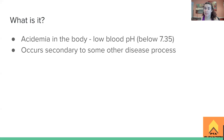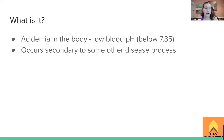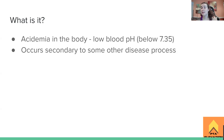Acidemia is happening in the body and that is due to a low blood pH. Normal blood pH range is 7.35 to 7.45. If it drops below that, we are going into an increased amount of acid in the blood — the blood is becoming acidic, essentially just a bunch of hydrogen ions floating around. And this always occurs secondary to some other disease. You do not get metabolic acidosis all by itself — it's not a random thing that just happens on its own. It's happening secondary to something else.